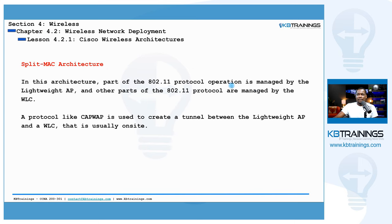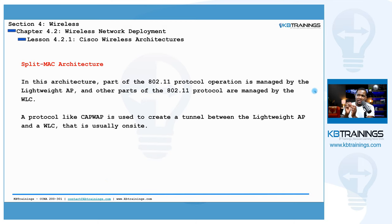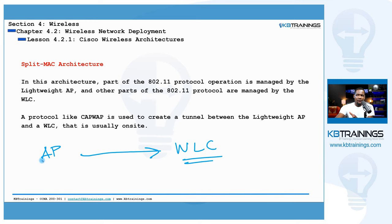Now we'll talk about the third architecture: split-MAC architecture. The wireless LAN controller is a device that controls your wireless LAN — it pushes configurations to devices and handles major functions. This architecture uses lightweight access points, which are not autonomous. They are fully dependent on the wireless LAN controller because some wireless network functions reside on the AP and others on the WLC. That's why they're called lightweight — they don't have a lot of functions or memory; they do some of the work while the WLC does the rest.